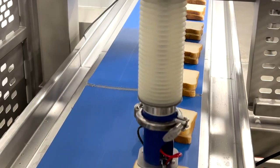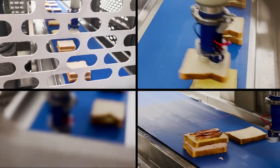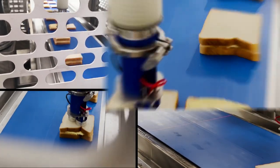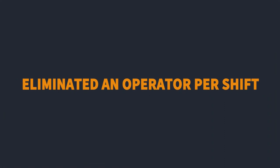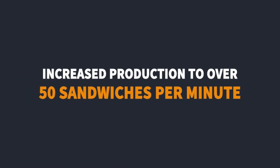Grow Tea's new robotic solution lids sandwiches with a hygienic 4-axis robot and custom end-of-arm tooling, eliminating an operator and increasing production to over 50 per minute.